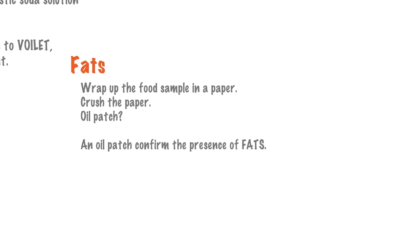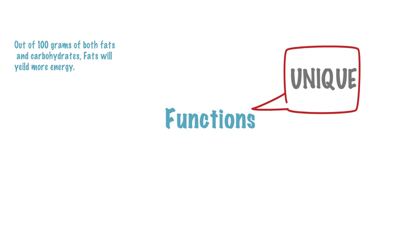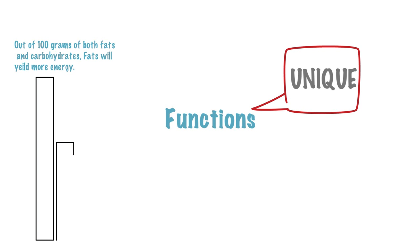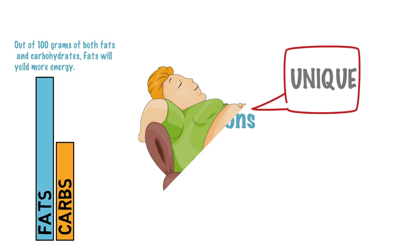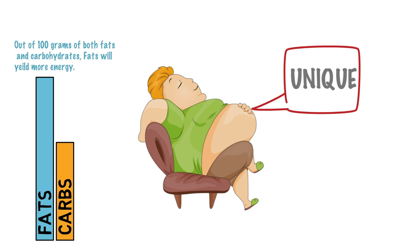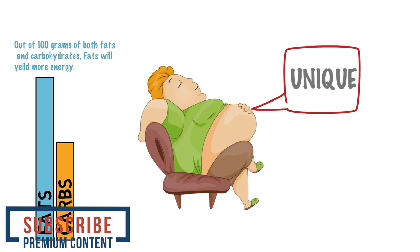Now let's come to studying the functions of these nutrients. Why are we studying functions and not benefits? Because benefits can be similar for two or more nutrients, but functions are mostly unique. For example, both carbohydrates and fats are known for giving energy. In fact, if we consider the same quantities — say 100 grams — fats will give much more energy compared to carbohydrates. But does that mean we can ignore carbohydrates completely? Absolutely not. Each nutrient has its own characteristic properties. We will be studying each nutrient in detail — their functions, sources, the diseases associated with deficiency, and symptoms of such diseases.